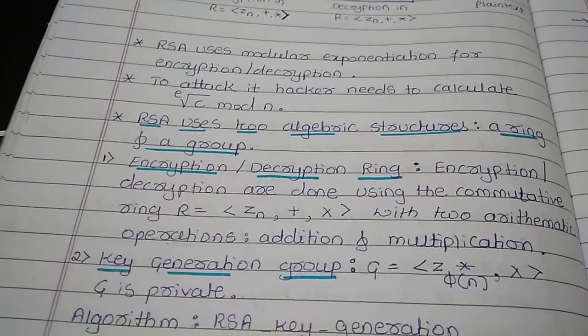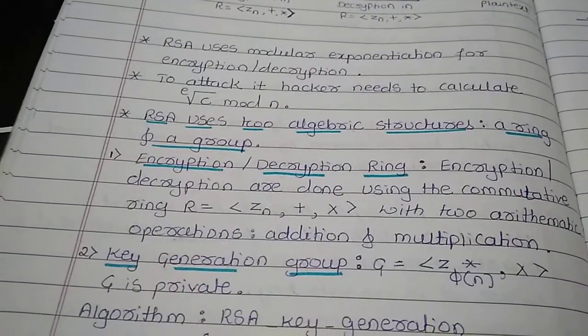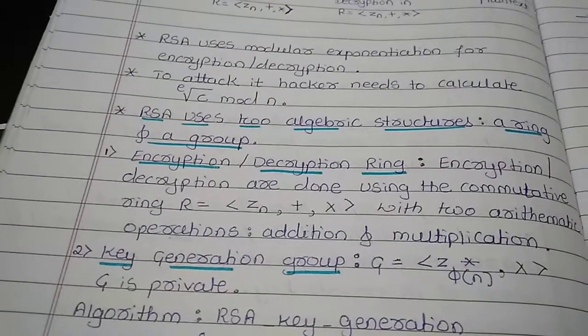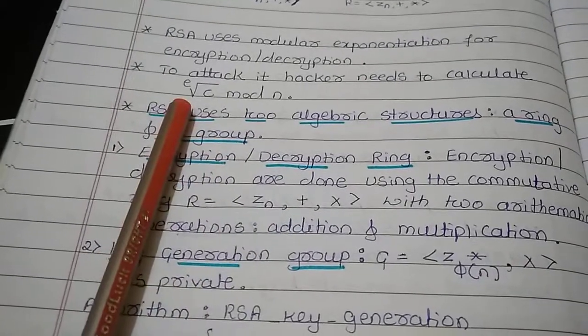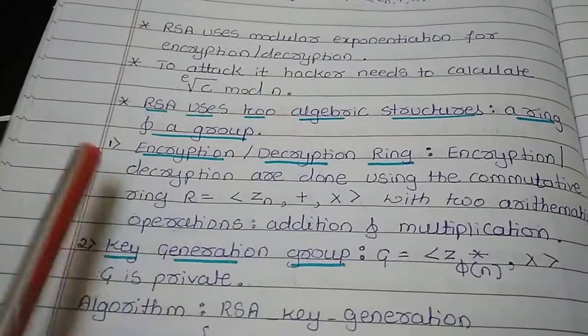RSA uses modular exponentiation for encryption and decryption. If the hacker is going to hack the data, he has to calculate root C mod N.